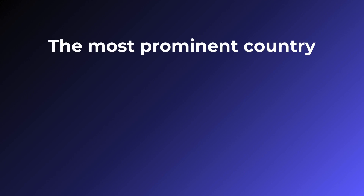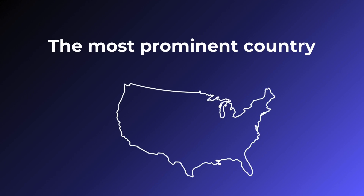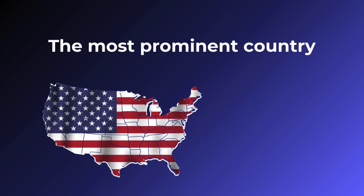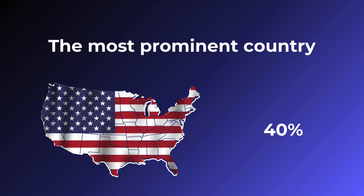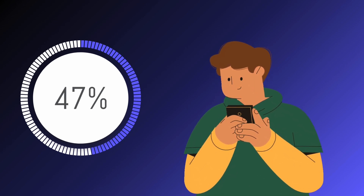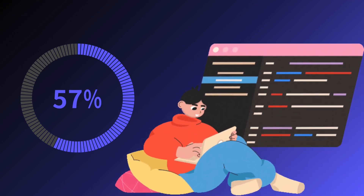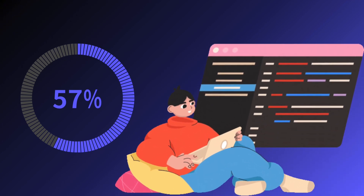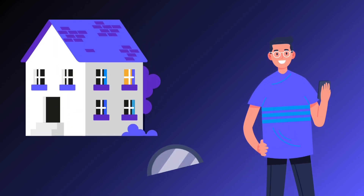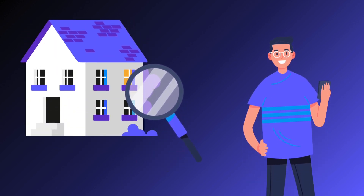The most prominent country to use smart home products is definitely the US, accounting for 40% of the global market of consumer spending in this segment. According to Rochester Real Estate, about 47% of US-based Millennials own at least one smart home product, and 57% of Americans in general consider IoT technology to be incredibly time-saving. Even realtors admit that if they build an app-controlled smart home, they sell it faster than a regular one.